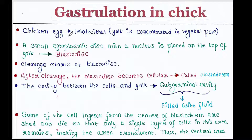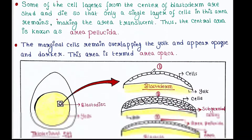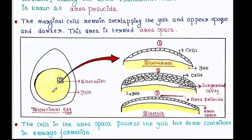Basically, the chicken egg is telolecithal, which means the yolk is concentrated in the vegetal pole. Here is the egg — this is the vegetal pole and this is the animal pole, and you can see that the yolk is concentrated at the vegetal pole.